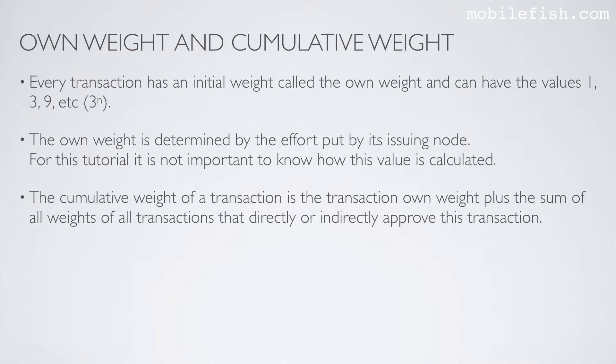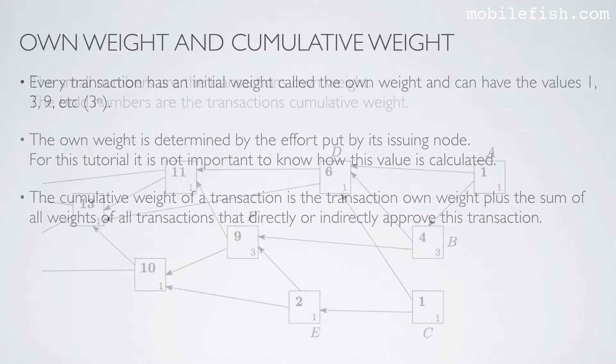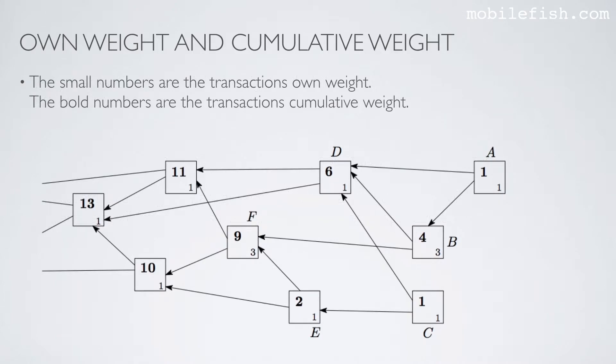The cumulative weight of a transaction is the transaction own weight plus the sum of all weights of all transactions that directly or indirectly approve this transaction. The small numbers are the transaction's own weight. The bold numbers are the transaction cumulative weight.